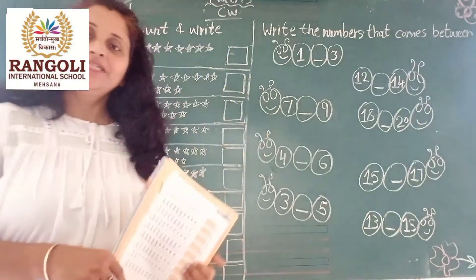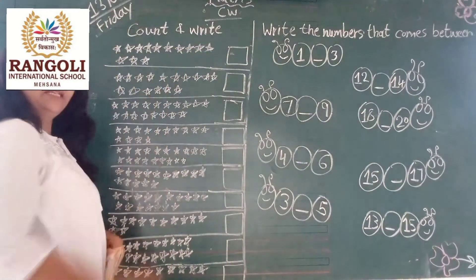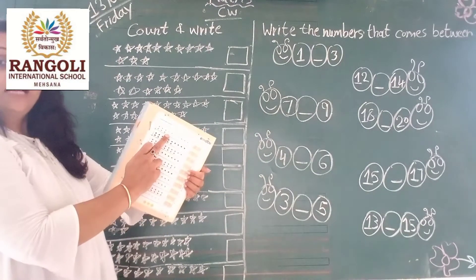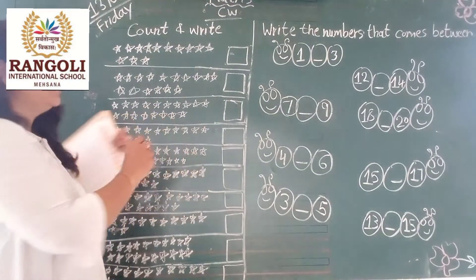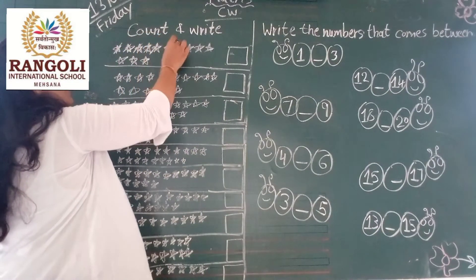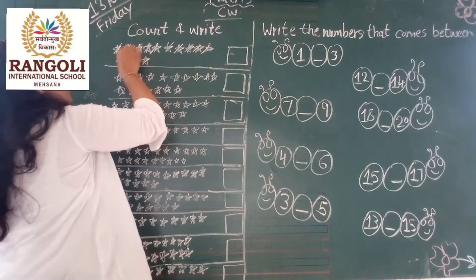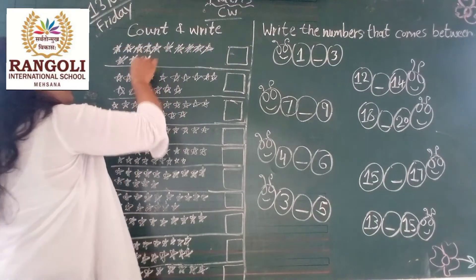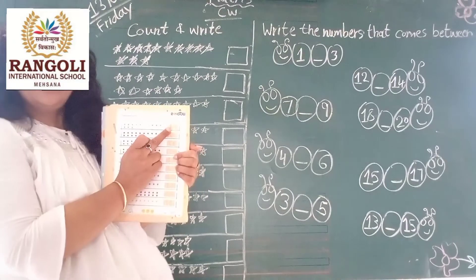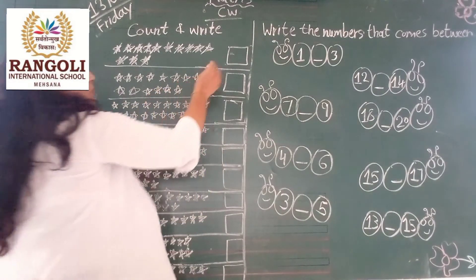Okay, start with me. First, how many stars? How many stars in the orange column? Everyone count with me: 1, 2, 3, 4, 5, 6, 7, 8, 9, 11, 12, 13. How many stars? 30. So, you have to write 30 in this black paper box.